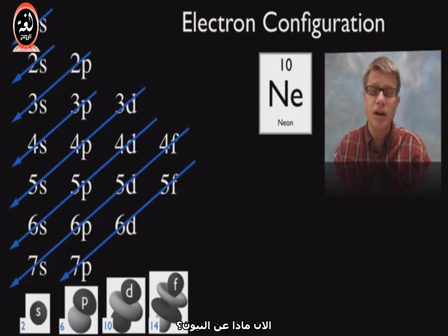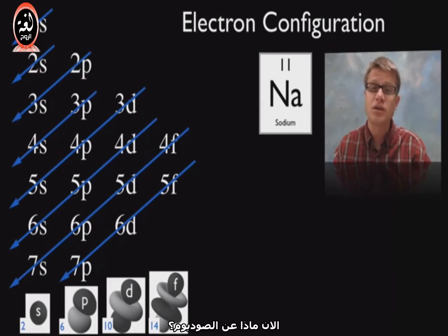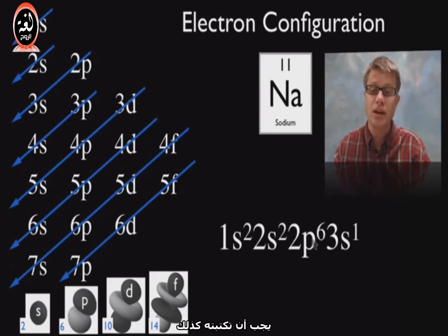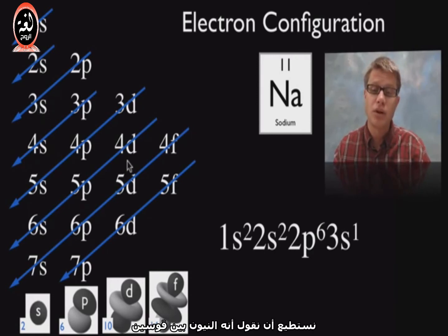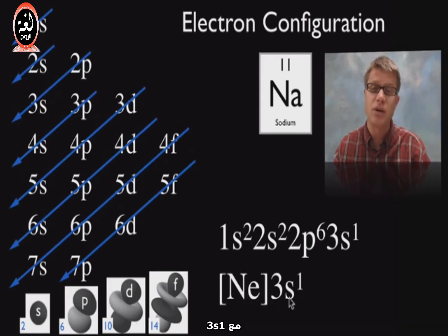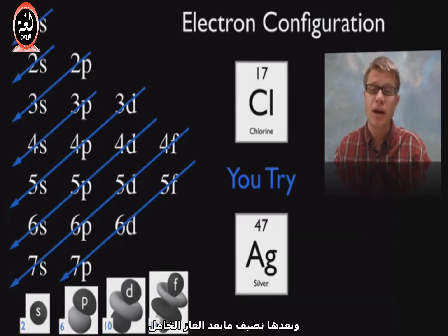What about neon? Pause the video and always try it out. Neon is 1S2, 2S2, 2P6 — remember P can have 6. What about sodium, which is number 11 with 11 electrons? We could write it out as 1S2, 2S2, 2P6, and then the next one goes into 3S1. But you can see how long these electron configurations are going to get, so we can abbreviate. We could just say it's neon in brackets with 3S1 — we write the noble gas in brackets and then add what comes after.